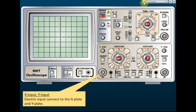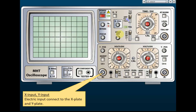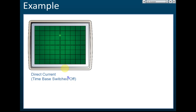We're talking about the Y-input on an oscilloscope. The X-input is the time base. If the Y-input is a direct current and we switch off the time base, the bright spot is initially at the center. The Y-input is what you want to measure — you plug it into the oscilloscope. With DC connected and the time base off, the bright spot will move either up or down depending on the connection. In this case, it moves up.